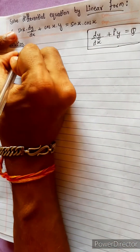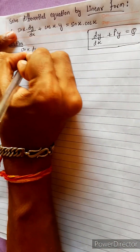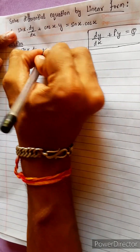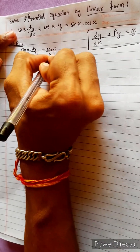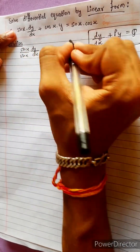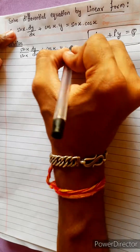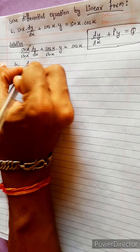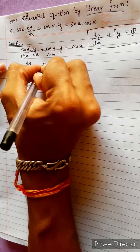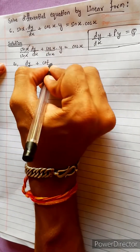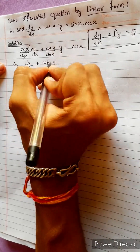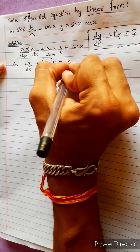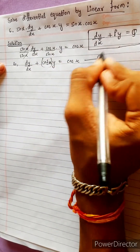We will divide by sin x. dy/dx divided by sin x, plus cos x divided by sin x, into y. Sin x divided by sin x cancels. Cos x remaining. So dy/dx plus (cos x / sin x)·y equals cos x. Now compare the equation.